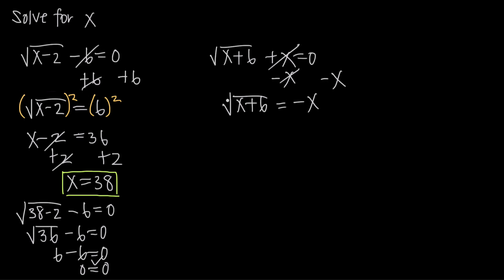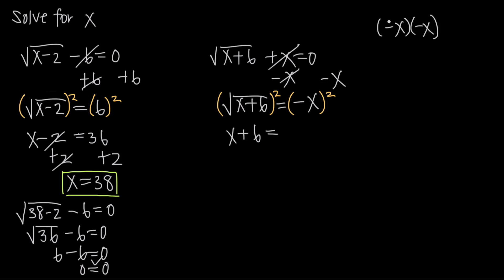Now that the square root is isolated, we square both sides. Squaring the square root cancels, leaving just what's inside: x plus 6. On the right we have negative x times negative x. Be careful with the negative signs here — when we multiply two negatives together, they cancel to become a positive, so we get x times x, or x squared.